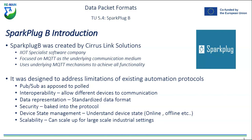Spark Plug B was created by a group called Cirrus Link Solutions, an IoT specialist software company. Their Spark Plug B solution is an open-source solution. It focuses on MQTT as the underlying communication medium and uses all its underlying mechanisms to create an OT/IIoT infrastructure. It was designed to address the limitations of existing automation protocols — using publish-subscribe instead of polling, enabling interoperability between devices, providing standardized data representation, baked-in security features, device state management, and scalability for large industrial settings.